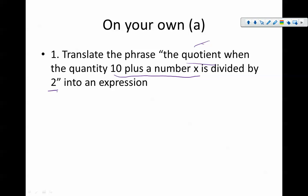So the quotient, this is a division problem when we take 10 plus the number X, 10 plus the number X is divided by 2. Notice that this fraction bar goes all the way across the 10 and the X because it tells me that I have to do 10 plus X first and then divide that, what I get, by 2.